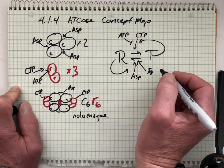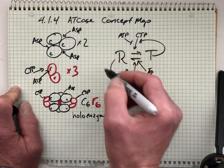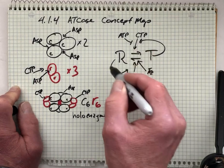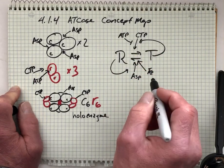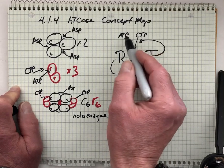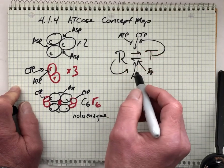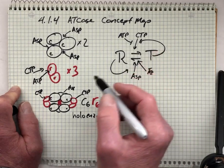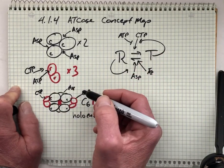And the whole system acquires these intricate, sort of intelligent properties able to sense and respond to the levels of multiple molecules: aspartate, ATP and CTP, as a consequence of these regulatory subunits.